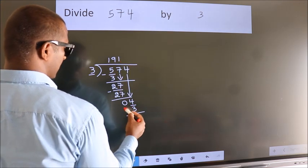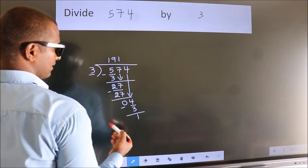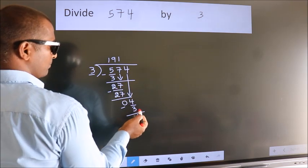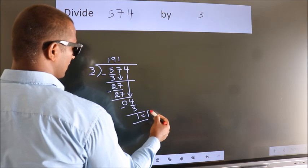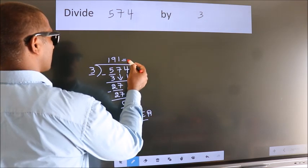Now, we subtract. We get 1. No more numbers to bring it down. So, we stop here. This is our remainder. This is our quotient.